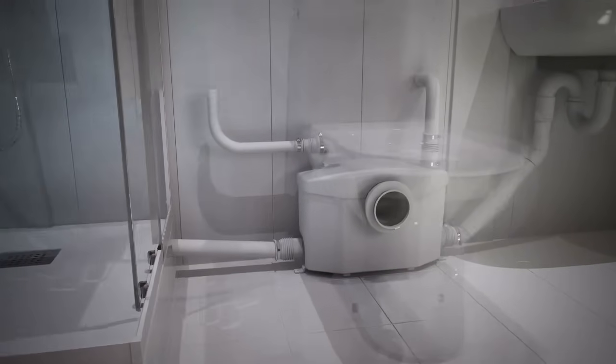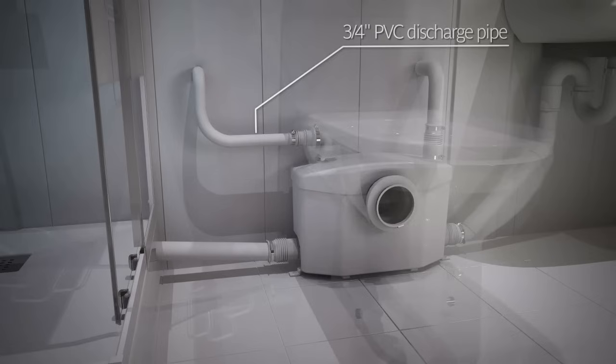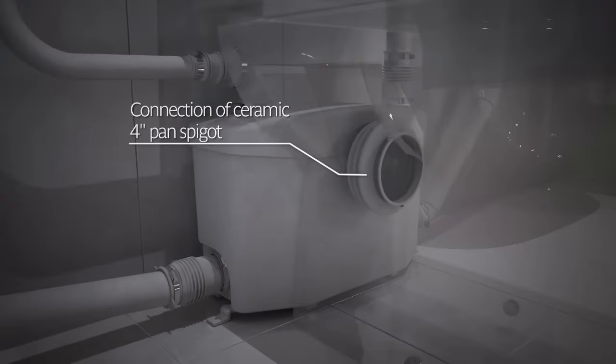Using the provided discharge elbow, connect your 3/4 inch discharge pipe. Then connect the toilet to the main inlet of the pump using the 4-inch coupling provided.